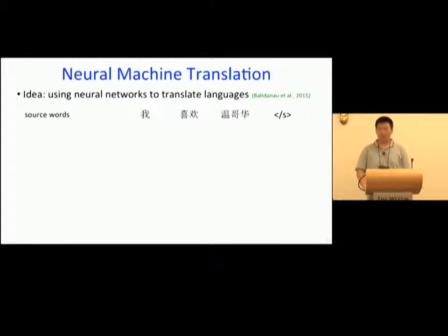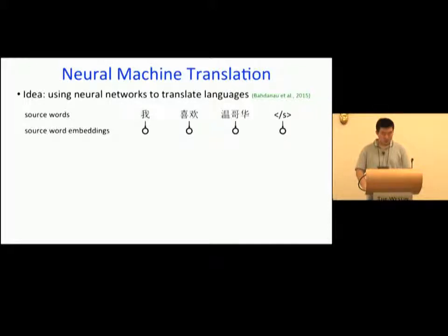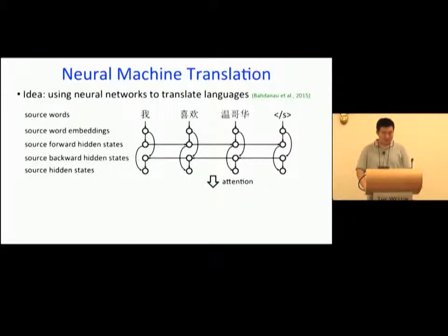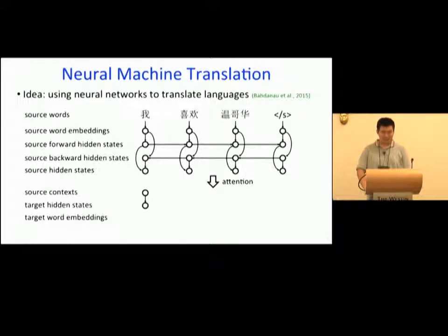Recent years have witnessed the rapid development of neural machine translation, which uses neural networks to directly map between natural languages. The standard architecture for MT is the attention-based encoder-decoder framework. Given a source sentence, the model first maps source words to source word embeddings. Then a forward recurrent network generates source forward hidden states, and a backward RNN generates source backward hidden states. They can be concatenated to form source hidden states that capture global context. The model dynamically generates source context for each target word using the attention mechanism. Another RNN called the decoder is used to generate target hidden states and words. The translation is generated word by word from left to right.